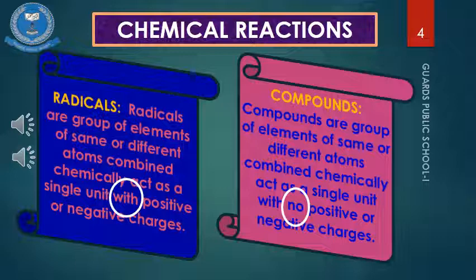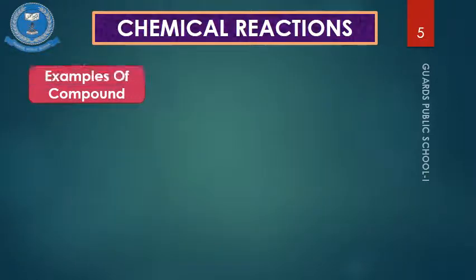Both radicals and compounds act as a single unit, but the major difference is that compounds are always neutral — they carry no charge of any kind. Radicals, on the other hand, have a positive or negative charge on them. We will understand this difference very well through examples. Let's look at examples and try to understand the difference between the two.